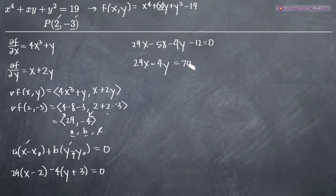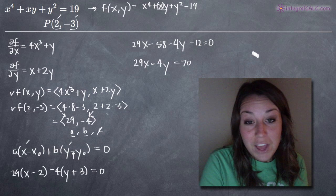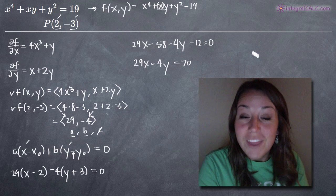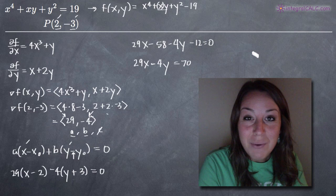This is the equation of the tangent plane at the point. 29x minus 4y equals 70. So that's it. That's our final answer. I hope this video helped you guys and I will see you in the next one.